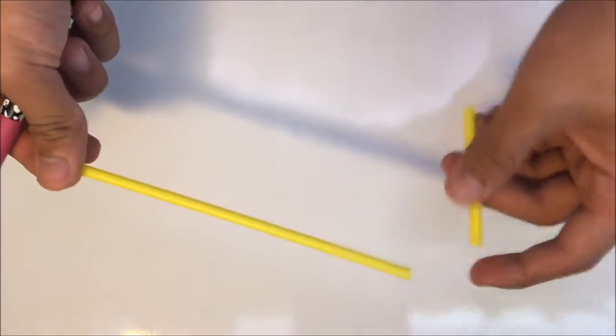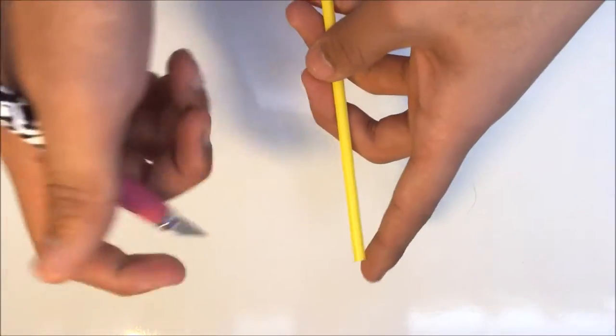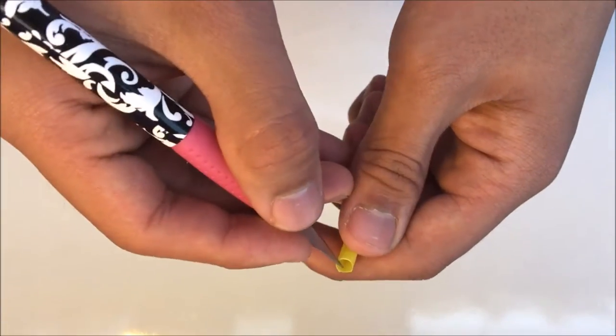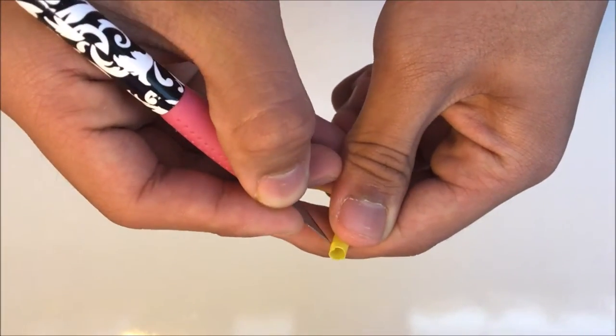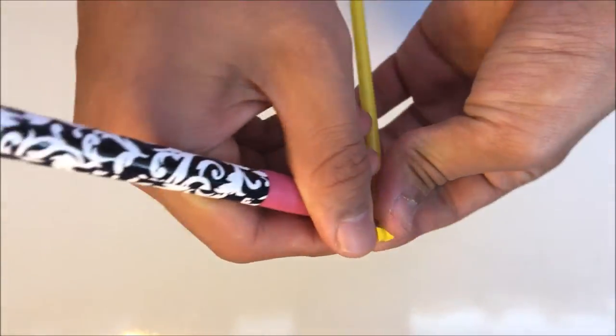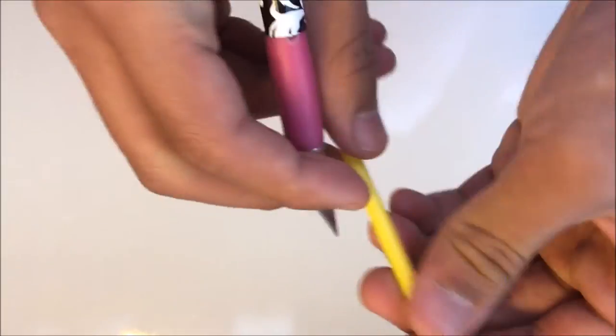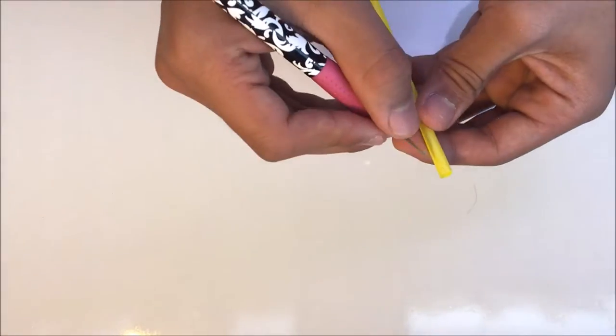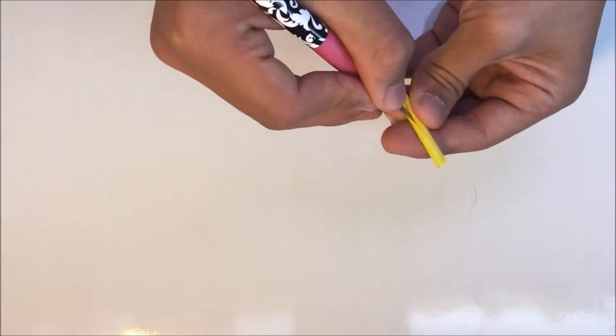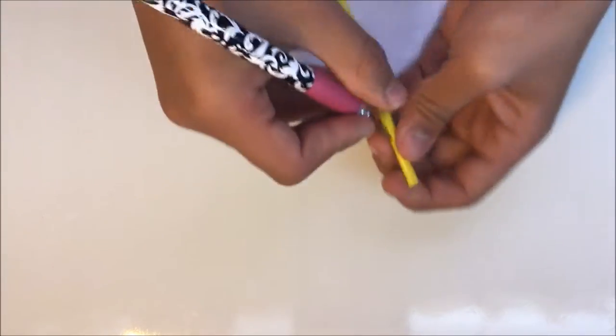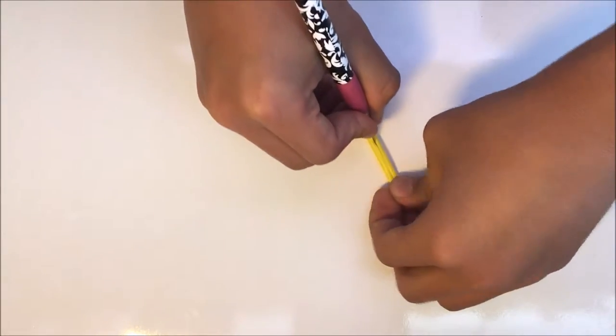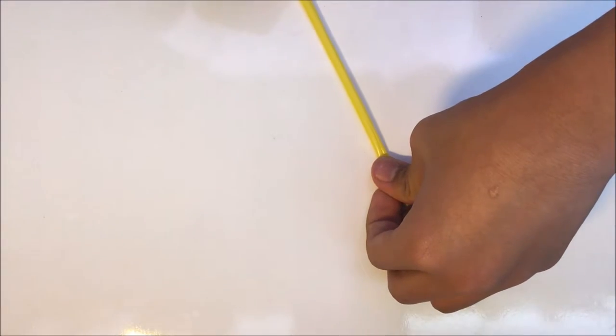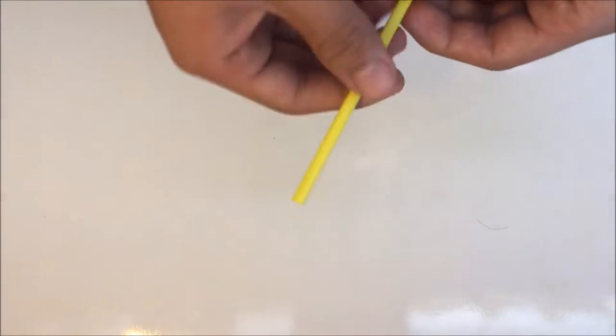Then you only have the straw part. Next, you can take your scissors or exacto knife, then you can just slice a slit. Try to make it as straight as you can down the straw, just like this.